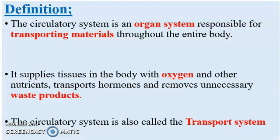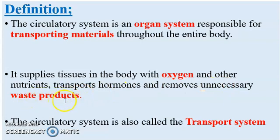Let's start with the basic definition of the circulatory system. The circulatory system is an organ system responsible for transporting materials throughout the entire body. It supplies tissues in the body with oxygen and other nutrients, transports hormones, and removes unnecessary waste products. The circulatory system is also called the transport system.